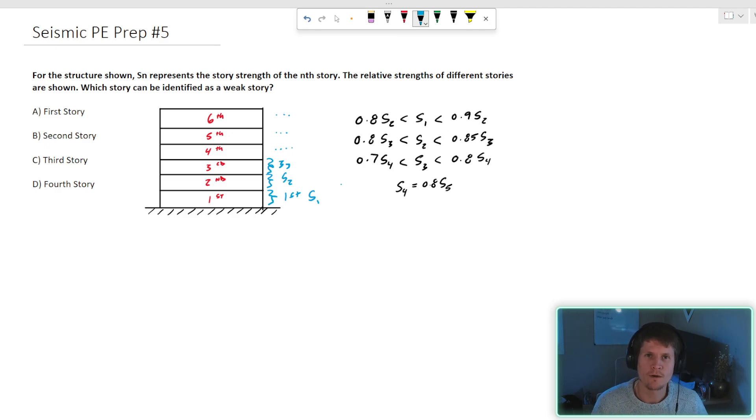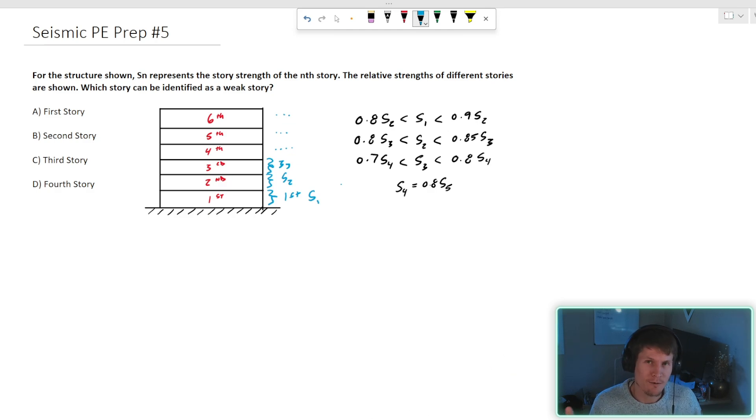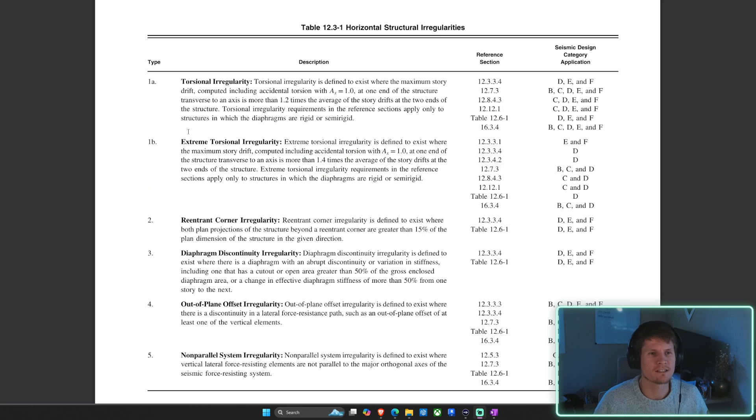As you're getting comfortable going through these PE seismic example problems, you're going to be familiar that we're either going to be using chapters 11, 12, 13, 14, or 15 in the ASCE 7. We're going to find ourselves at table 12.3-1, horizontal structural irregularities. Or are we? Wait a minute. Are we?